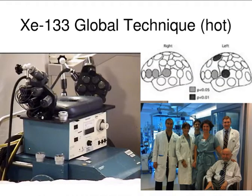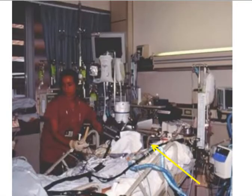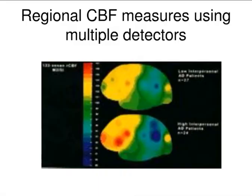This is another technique: xenon blood flow. Walter Obrist, who invented this — this is a detector that can look at various regions of the brain, and you can look at various areas that change.